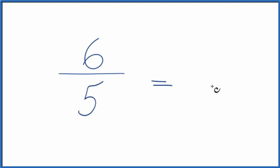What we need to do is find a common factor, something that goes into both 6 and 5. And the only common factor that goes into 6 and 5 is 1. So we divide 6 by 1, we get 6. Divide 5 by 1, we get 5. And that's what we started with.